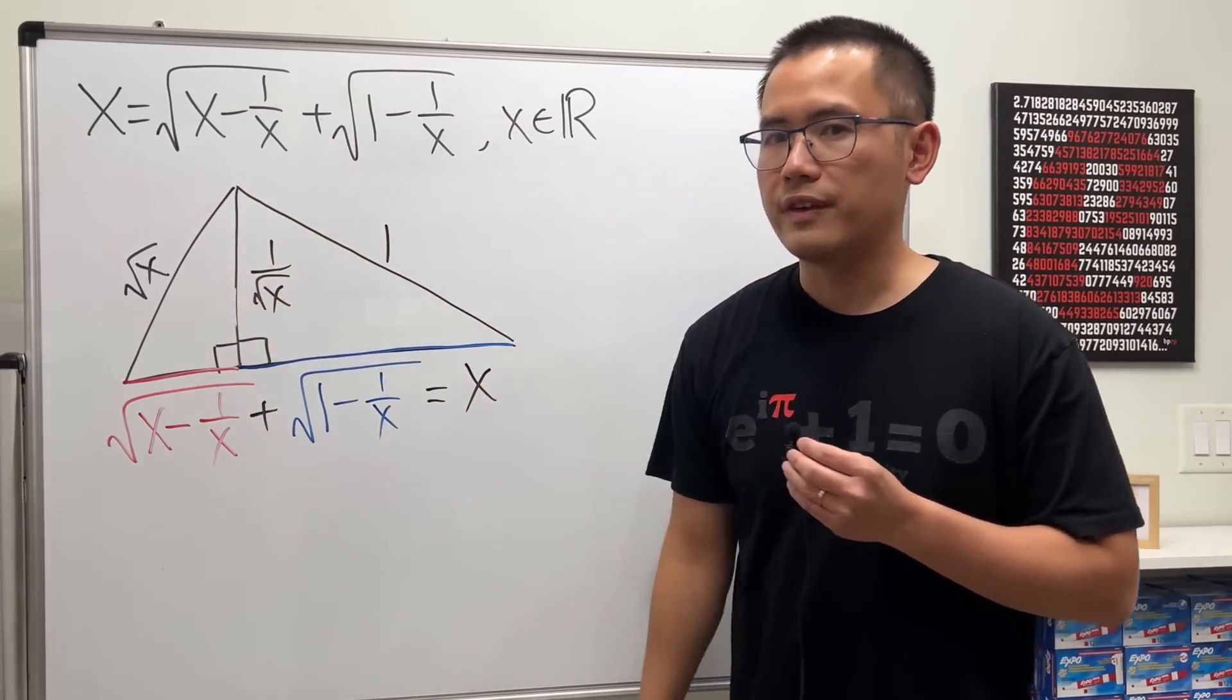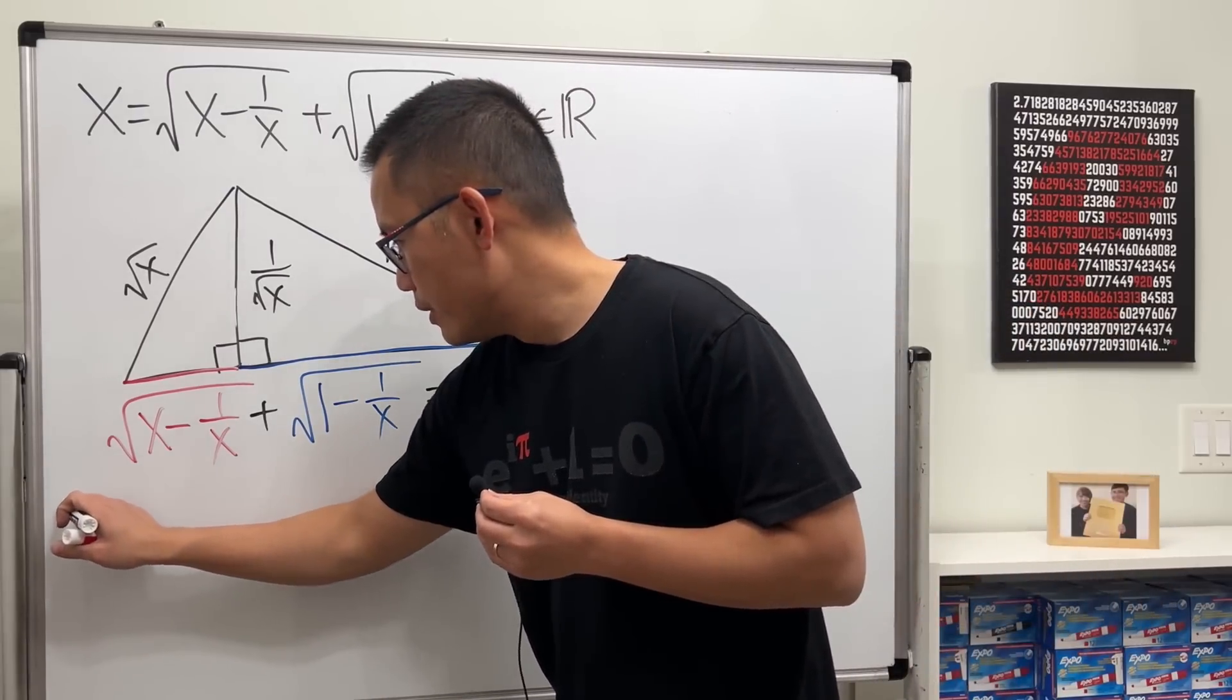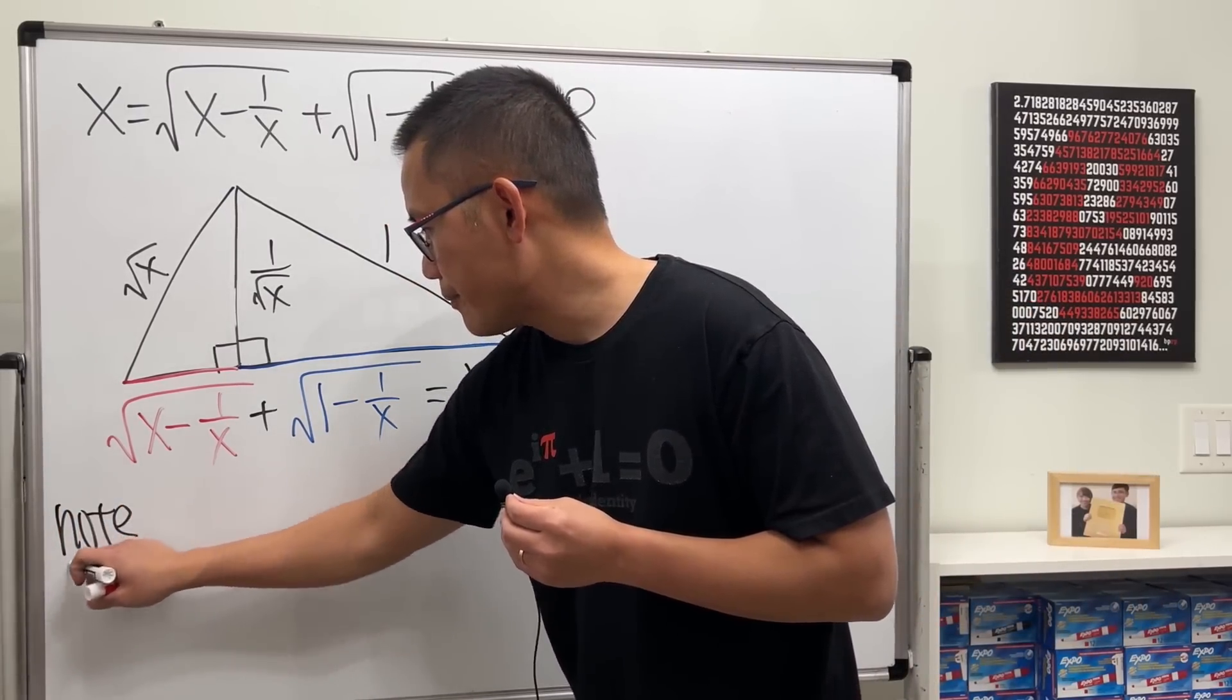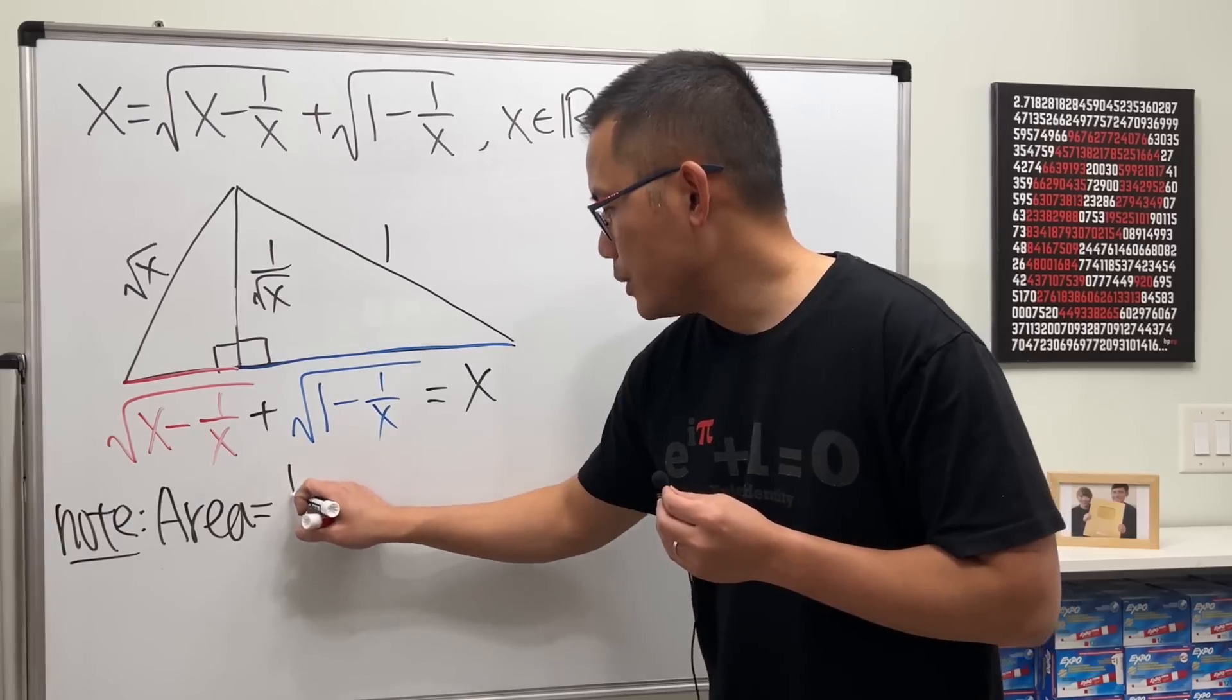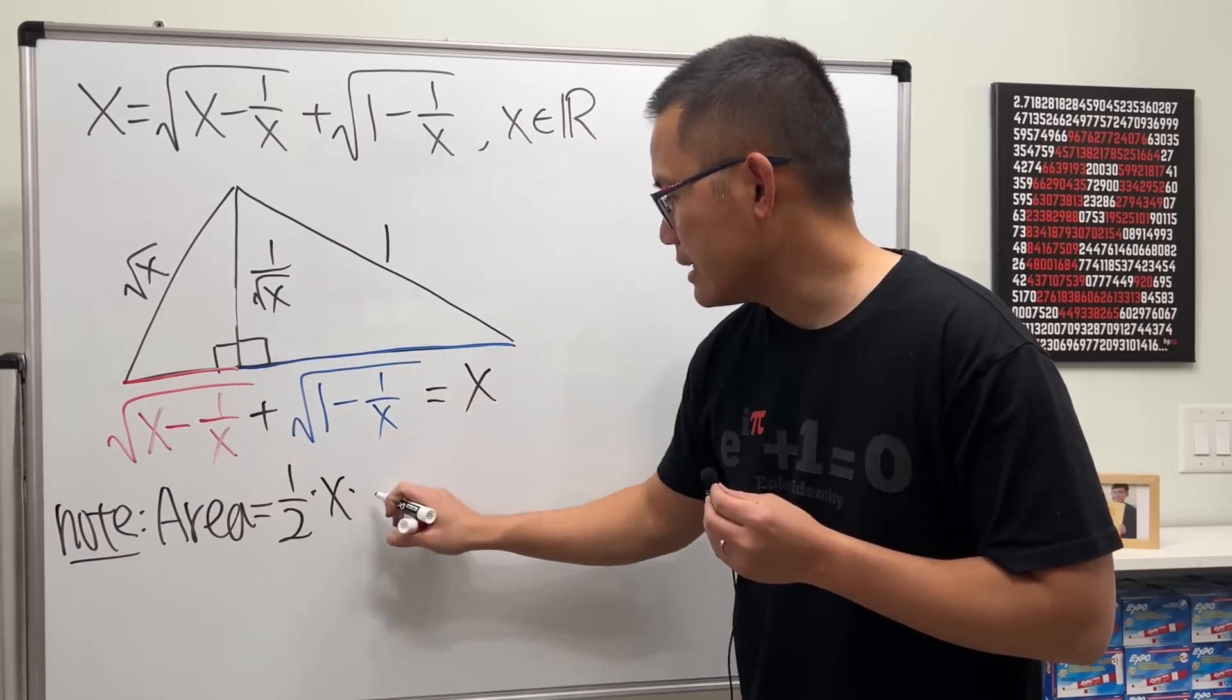So note that the area of the triangle is just going to be 1/2 times the base times the height.